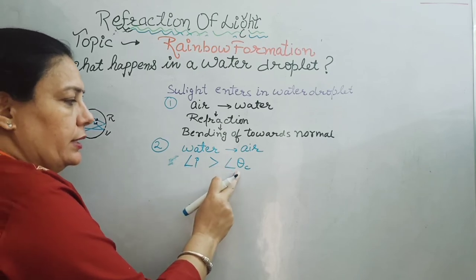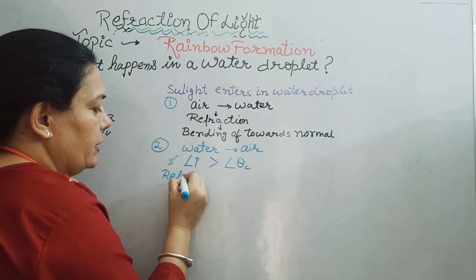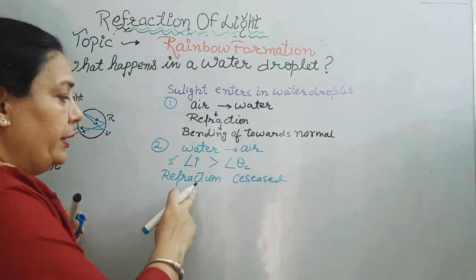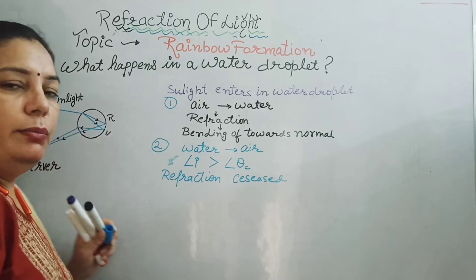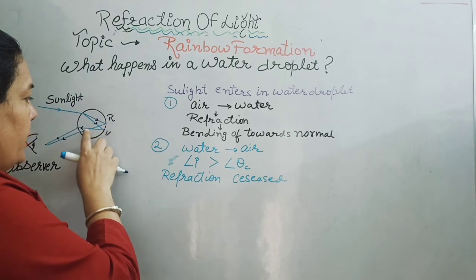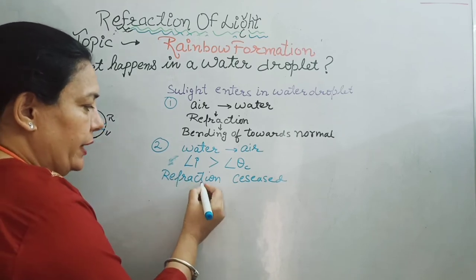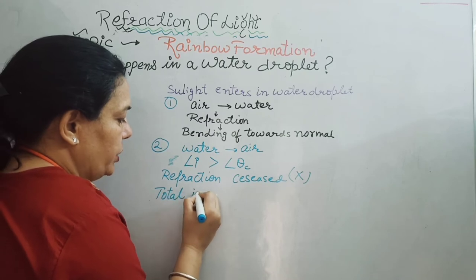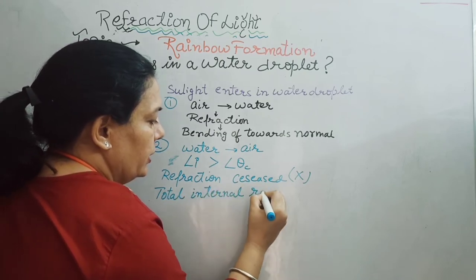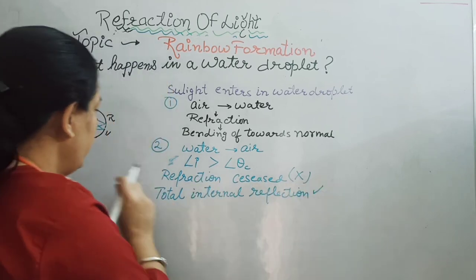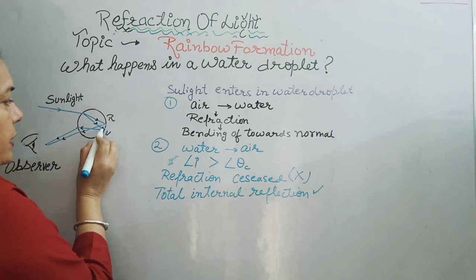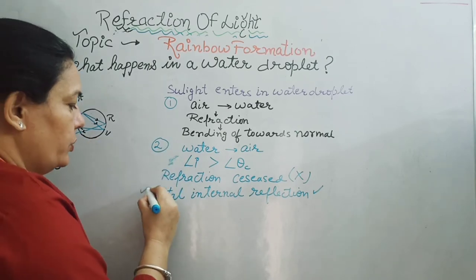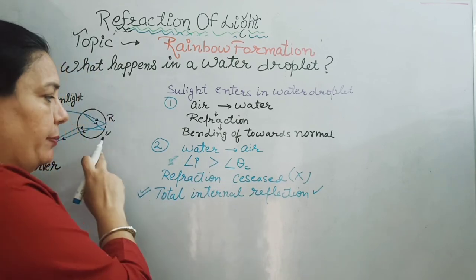If the angle of incidence is greater than the critical angle, then refraction is ceased — it does not take place. In place of refraction, this light ray starts traveling in the same medium again. So total internal reflection takes place. The whole band of seven colors is again reflected in the same medium. This phenomenon is known as total internal reflection of light.